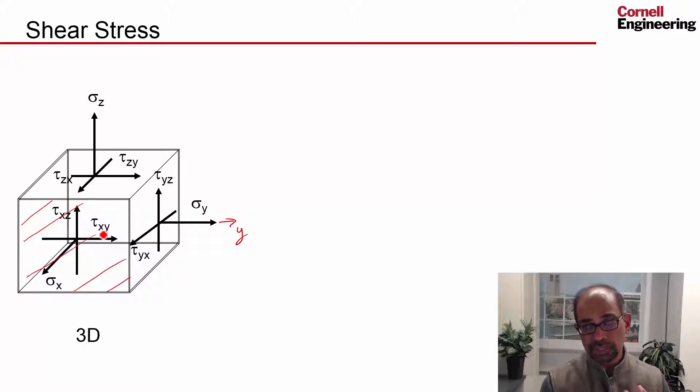To denote the shear you need two indices - one to indicate which plane it's on and the other to indicate the direction. So when I say tau xy, this indicates the plane on which it's acting. The normal to that plane is x, and that indicates the direction.